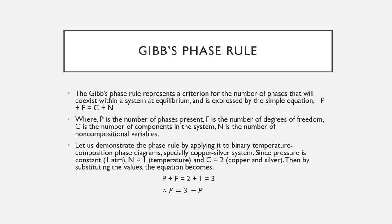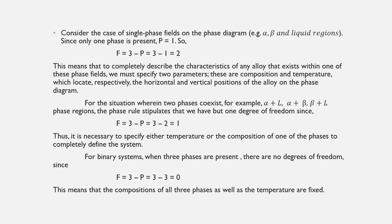Applying the phase rule to the copper-silver binary system at constant pressure (1 atm): N = 1 (temperature), C = 2, so the equation becomes P + F = 3, meaning F = 3 − P. For single-phase fields, P = 1, so F = 2. This means that to completely describe an alloy within a single-phase field, two parameters must be specified — composition and temperature, which locate the horizontal and vertical positions on the phase diagram.